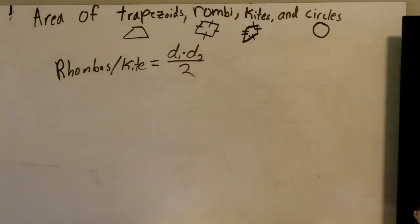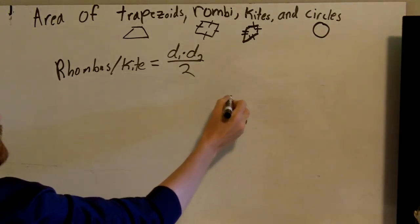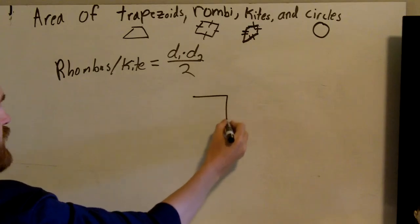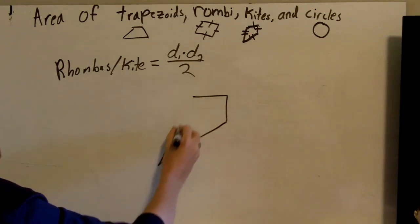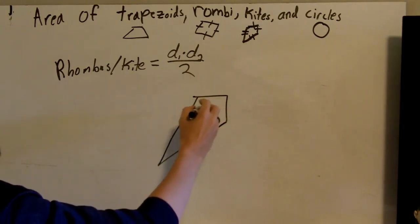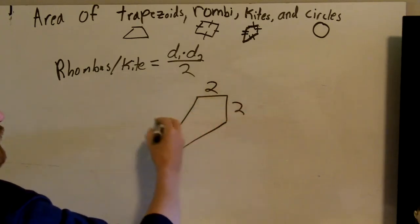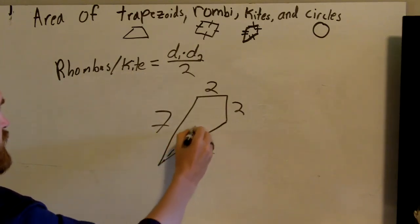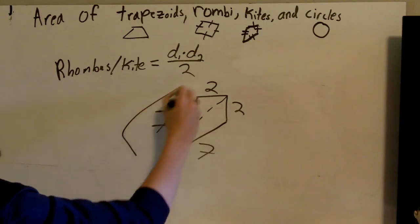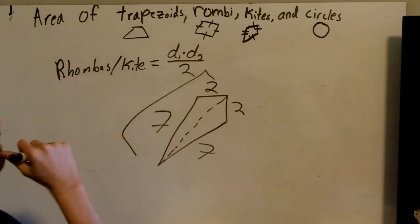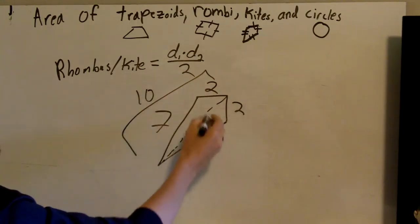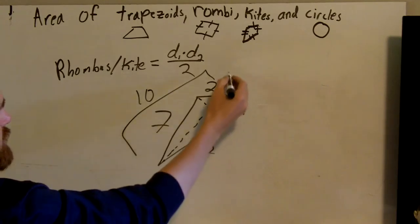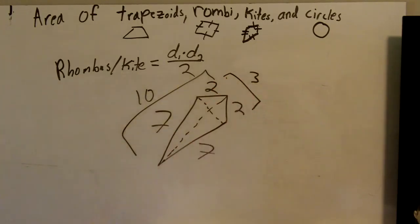So let's try a kite of that same kind. I'll have you actually attempt it on your own. And then if you have questions, just watch the next part and I'll go over it. Just to make it look nice, we'll say those sides are all 27. This diagonal is 10. This diagonal is 3. See if you can figure out the answer.